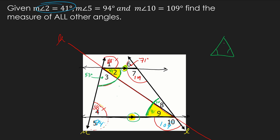We can check using the triangle angle sum — angles of a triangle add up to 180°. Adding 53 plus 86 plus 41 gives us 180. Checking the other triangle: 41 plus 109 plus 30 also gives 180. If we were stuck finding angle 9, knowing angle 3 and angle 4, we could have subtracted from 180 since on a triangle, if you know two of three angles, you subtract from 180 to find the third.